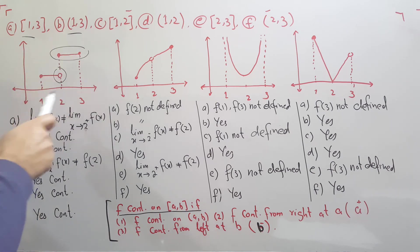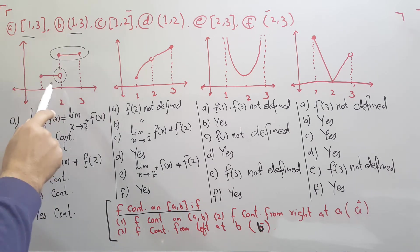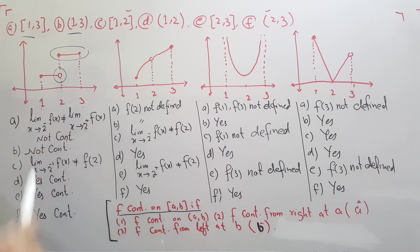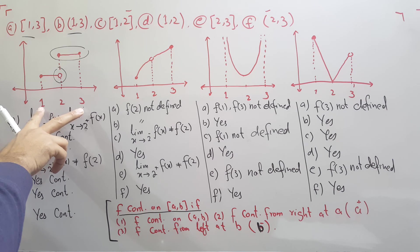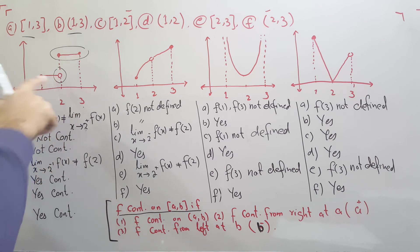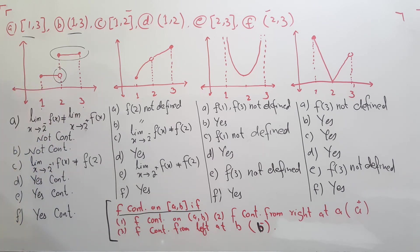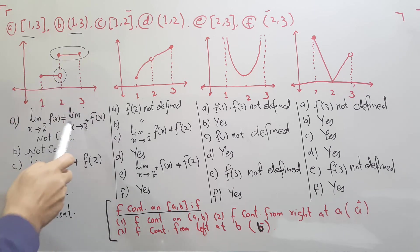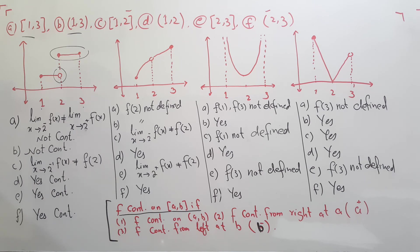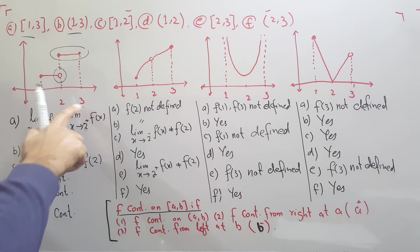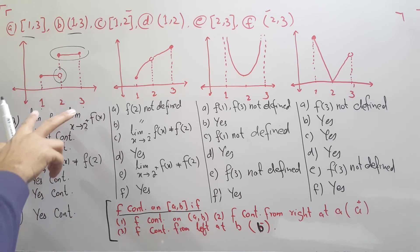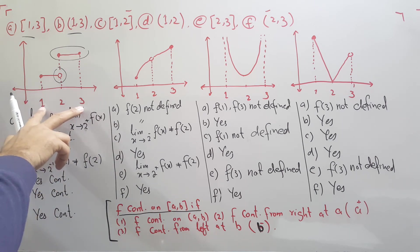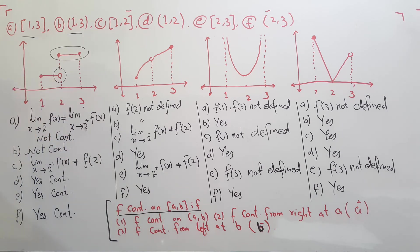Looking at this graph, in the closed interval [1, 3], point 2 is where the function is not defined, or the left-hand limit and the right-hand limit are not the same. This condition fails, so the function is not continuous on the closed interval [1, 3]. The same applies to the open interval (1, 3) — point 2 is where the function is not continuous, so it is not continuous on (1, 3) either.